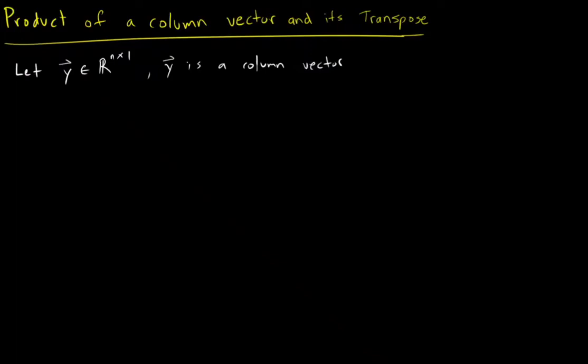Hello everyone, welcome back. In this video we're going to be looking at the product of a column vector and its transpose. So let's start off by letting y be a column vector. If it's a column vector, it has n rows and one column.